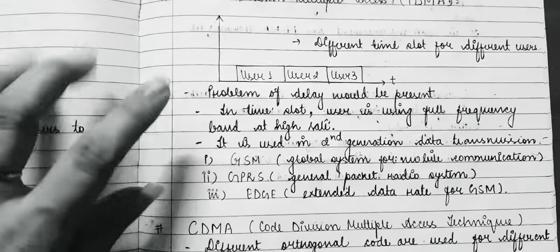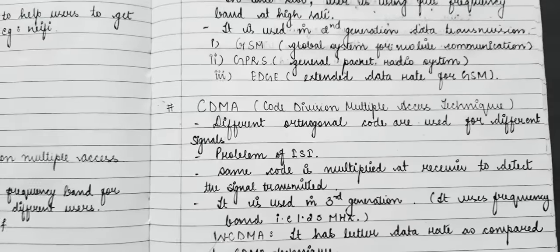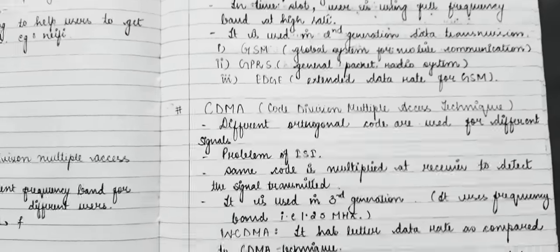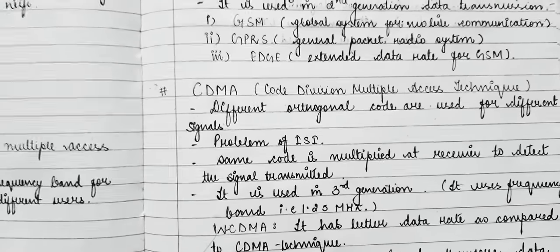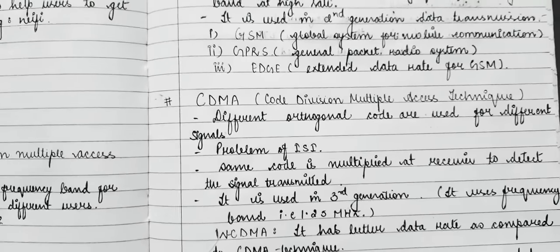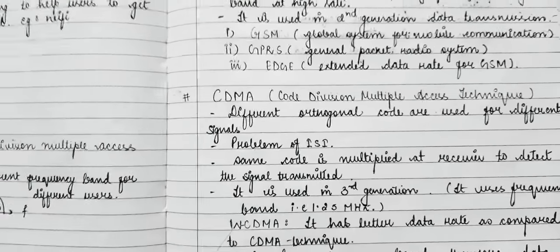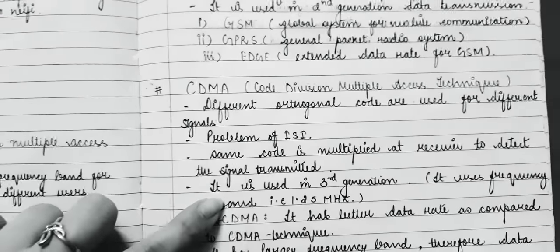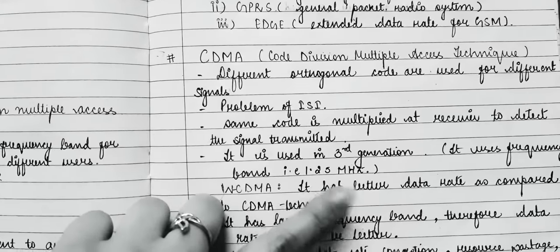There were some drawbacks in TDMA, so to overcome them we introduced CDMA. In CDMA, different orthogonal codes are used for different signals. The problem of ISI — inter-symbol interference — occurs here. The same code is multiplied at the receiver to detect the transmitted signal. CDMA is basically the method of the third generation (3G).